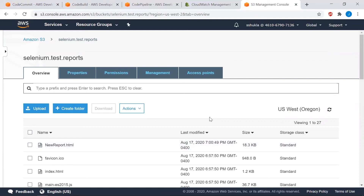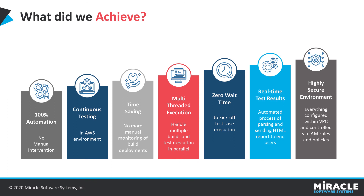So that was a quick demo. Let's get back to our deck and look at what we achieved. We achieved 100% automation in this whole process with no manual intervention required. We achieved continuous testing in the AWS environment and significant time savings — no one needs to manually monitor build deployments and then start sanity testing. We also achieved multi-threaded execution, handling multiple builds and test executions in parallel, zero wait time to kick off test execution, and real-time test results via automated HTML report delivery. Everything is configured within a Virtual Private Cloud and controlled by IAM roles and policies, making it highly secure.